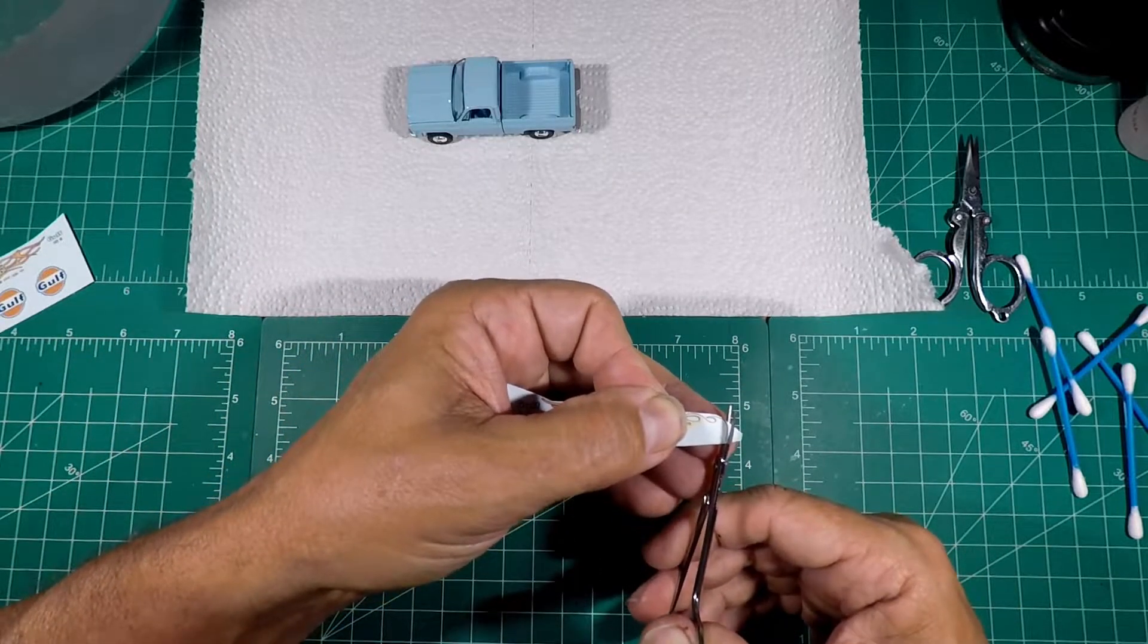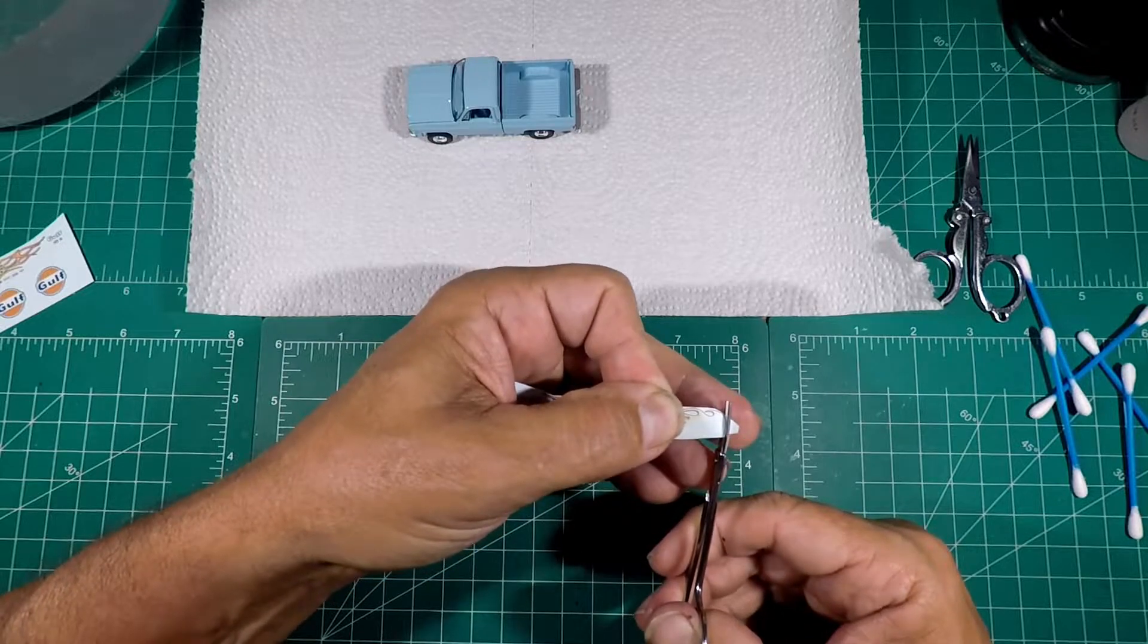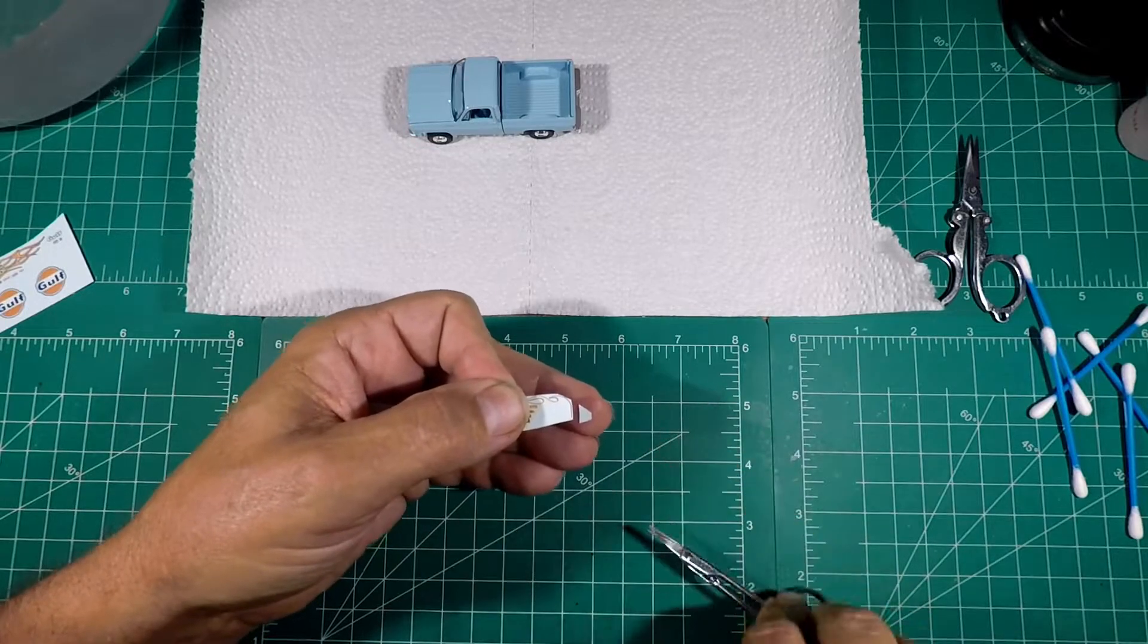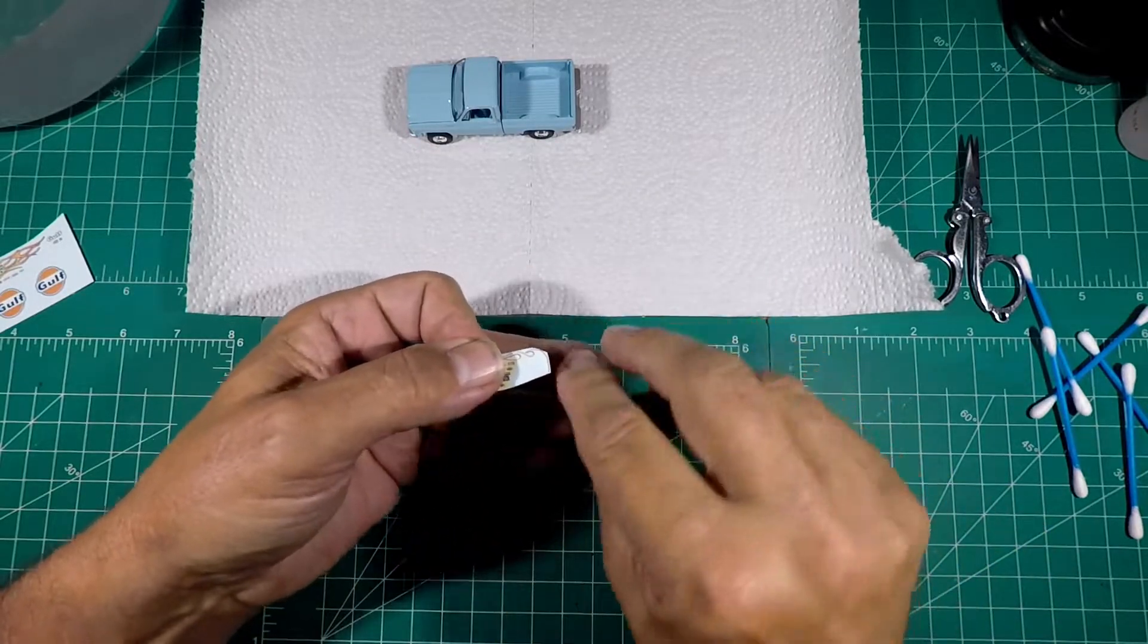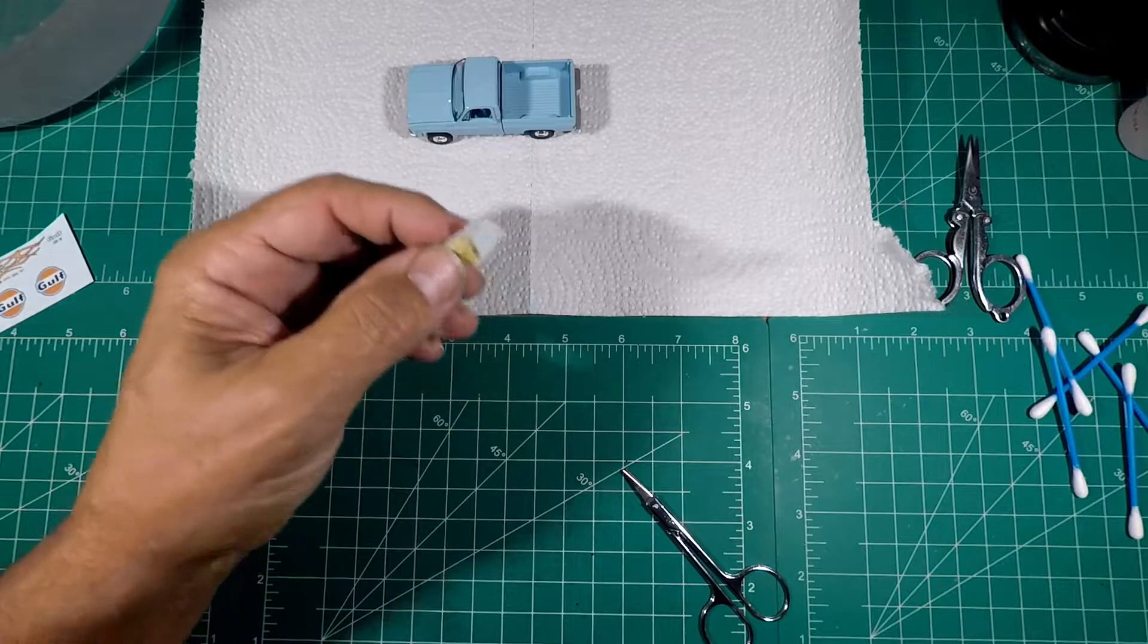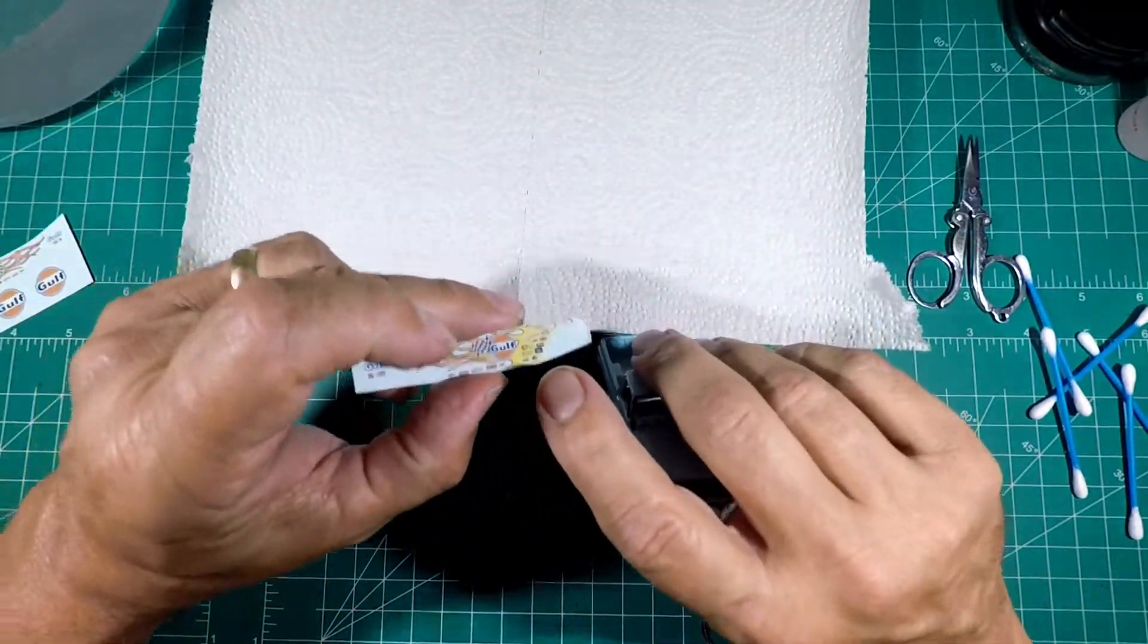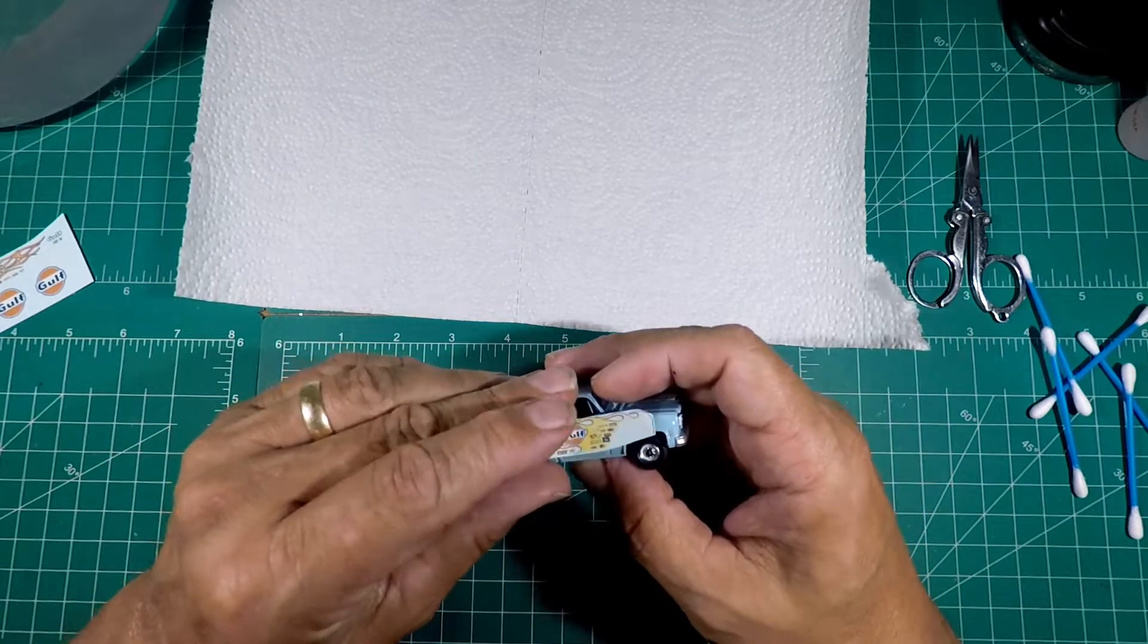And then we can modify from there, like cutting off that little nib. Which I don't think we'll be using this section right here anyway, probably from here up. Because of the angle of the truck and everything. Because if you see, these are more square and this is kind of rounded.